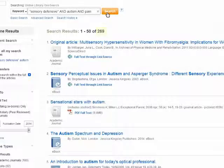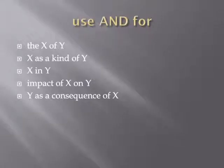It looks like you don't need to use AND, which might be true in a simple search like this. But you should get in the habit of doing it, because it's very necessary when your searches start to get longer and more complex. A hint about when you might need to use the AND operator is whenever your topic is 'the X of Y,' or 'the impact of X on Y,' or 'X as a Y,' or 'X in Y' — you need to use an AND to join concept X and concept Y.